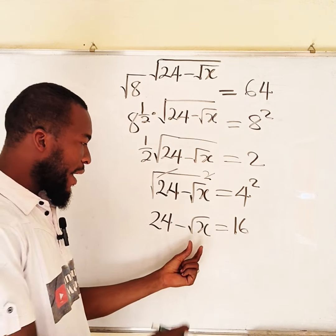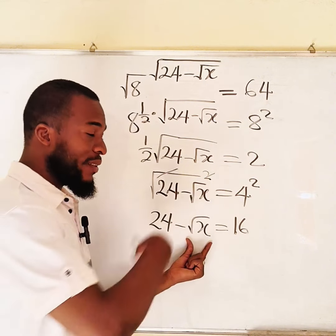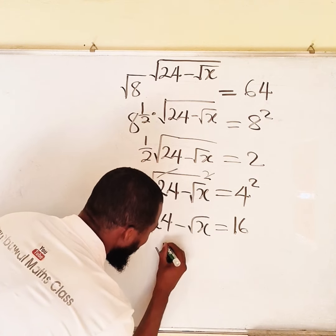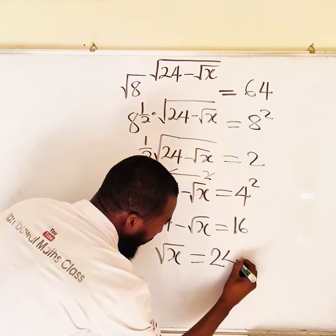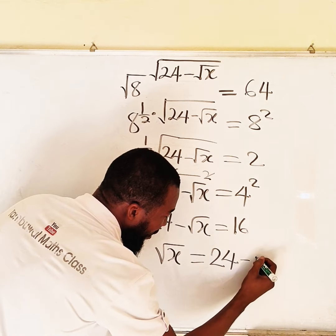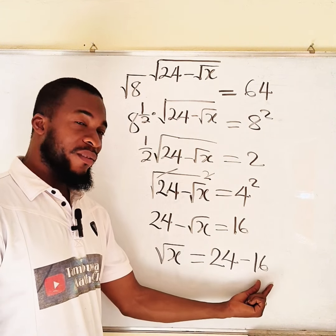Next, I can switch these terms. Negative square root of x as it crosses over becomes positive square root of x. We already have 24. As this crosses over, it becomes negative 16. And this minus this is 8. So we have square root of x to be equal to 8.